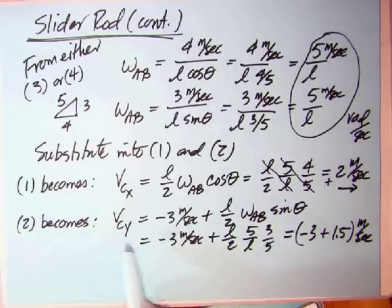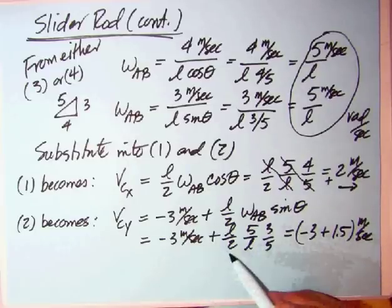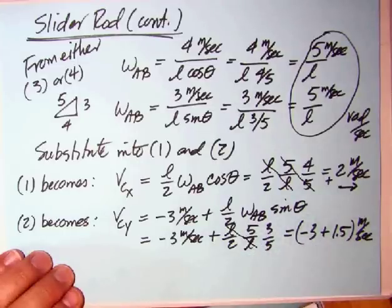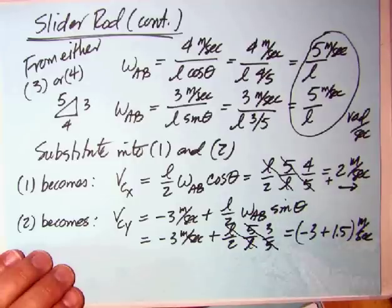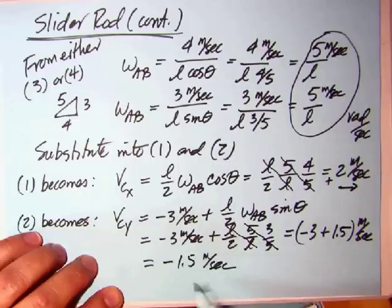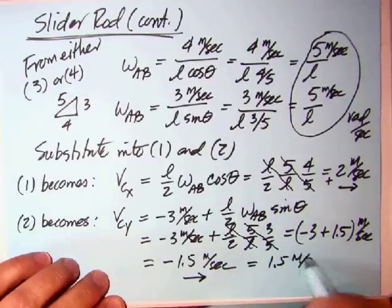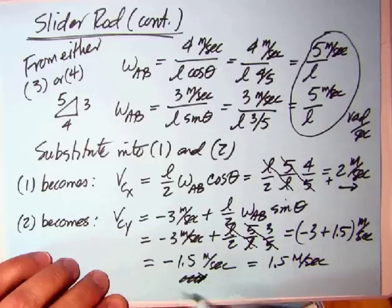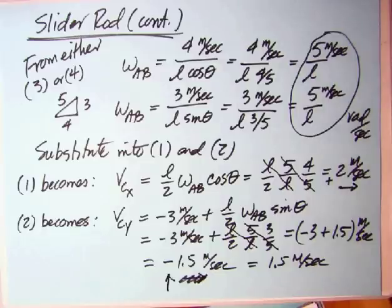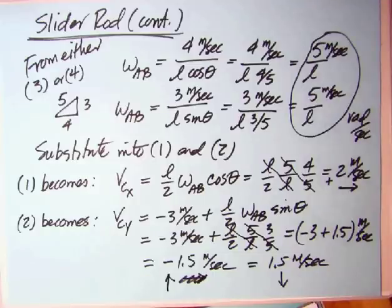If you look at the other one, we had VCY had a minus 3 meters per second, plus the L over 2 omega AB sine theta. We've got the minus 3 meters per second, L over 2, 5 over L, so the L's cancel, times sine 3 fifths, so the 5's cancel. We end up with minus 3 plus 3 halves. 3 halves is 1.5. So we end up with minus 1.5 meters per second. That is in that direction, the minus sign. That would be positive 1.5 meters per second down. The positive direction we had was up. So this is going to be positive 1.5 meters per second down, which is what we might have thought.